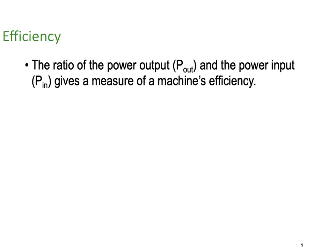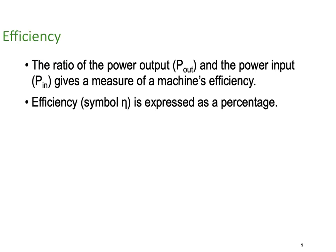Percent efficiency - the ratio of power out to power input - gives a measure of a machine's efficiency. We use the symbol eta (η), expressed as a percentage. The formula is η percent equals P_out divided by P_in, times 100, to convert it to a percentage rather than a decimal.